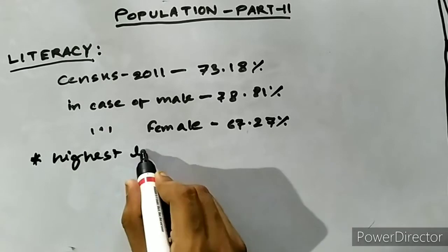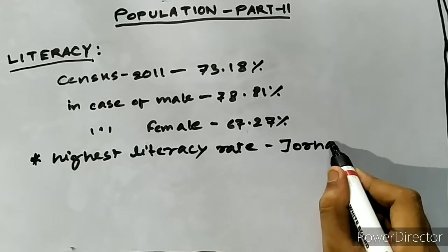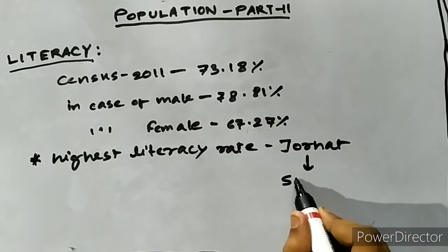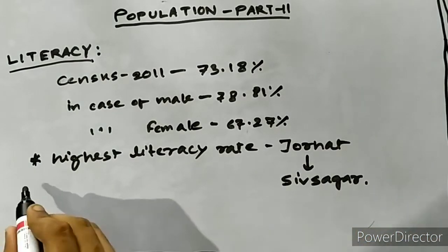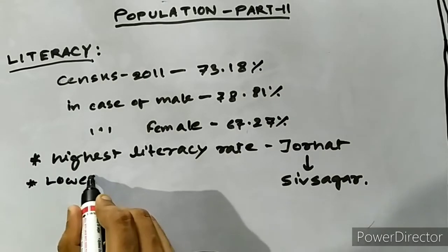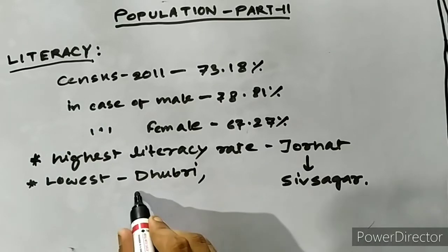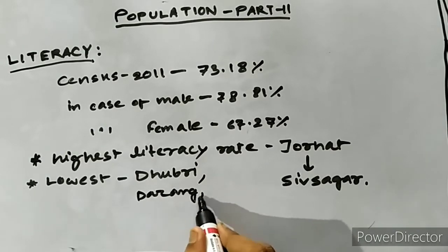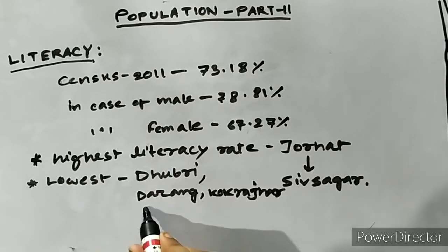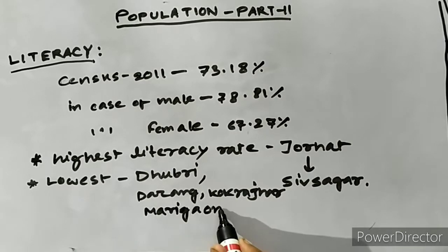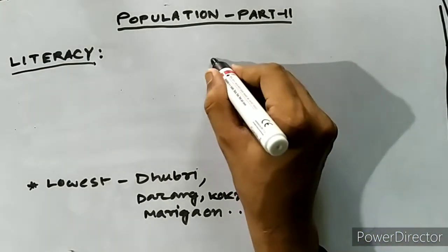Looking at the literacy proportional variation across districts, Jorhat has the highest literacy rate of all the districts, followed by Sivsagar. We see the lowest literacy rate in Dhubri. Other districts which are having low literacy rate are Darrang, Kokrajhar, Marigaon, and Barpeta. It is seen that the districts having a growth of population in the last few decades due to immigration tend to have a low literacy rate.